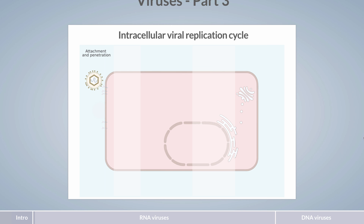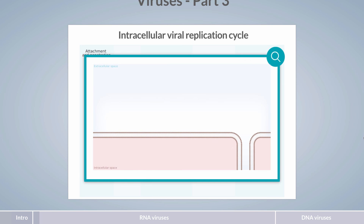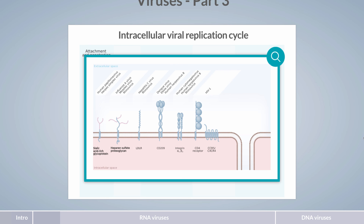The first stage of the intracellular phase of the viral replication cycle is cell entry. Viruses are unable to diffuse across biological membranes; therefore they infect host cells with membrane proteins that facilitate virus attachment. Viral membrane proteins facilitating entry include sialic acid-rich glycoproteins, proteoglycans such as HSPG, receptors such as the LDL and CD4 receptor, or proteins that form tight junctions such as occludins and claudins.